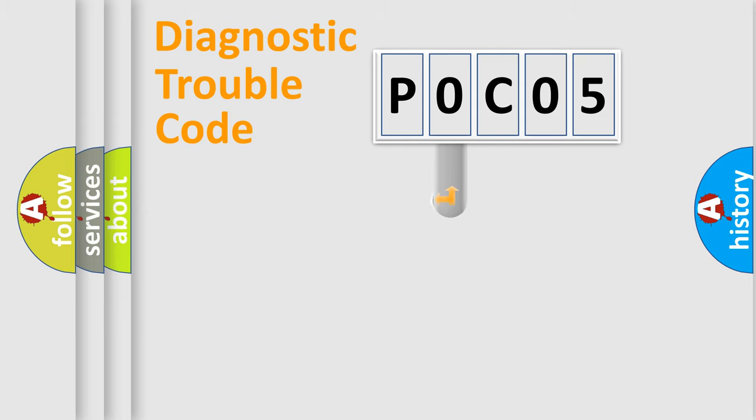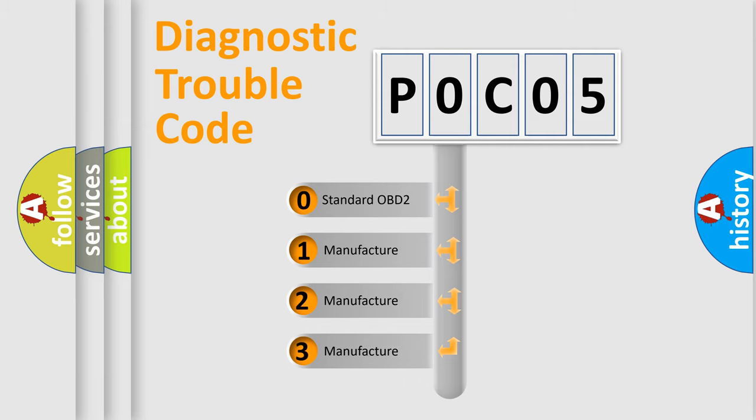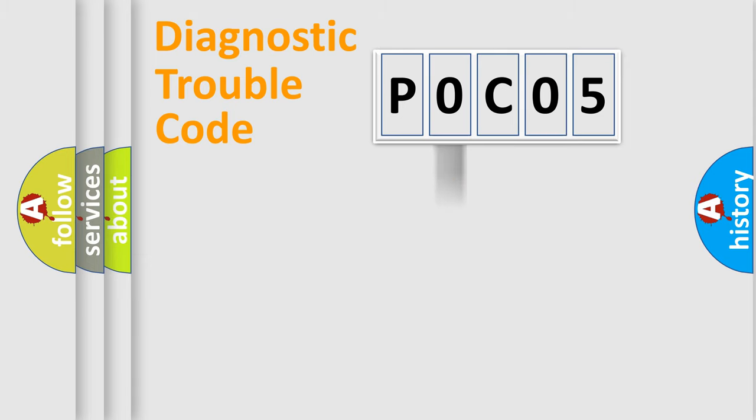This distribution is defined in the first character code. If the second character is expressed as zero, it is a standardized error. In the case of numbers 1, 2, or 3, it is a more prestigious expression of the car-specific error.